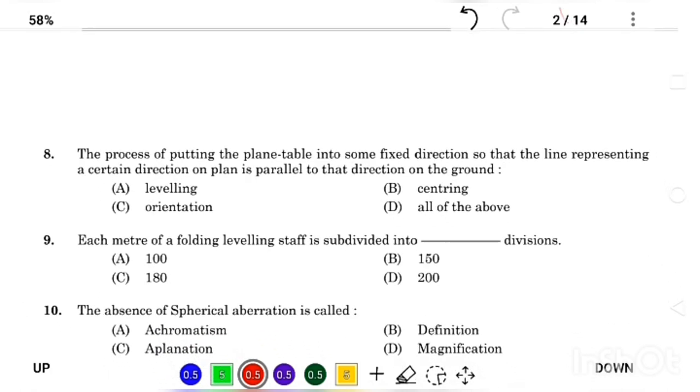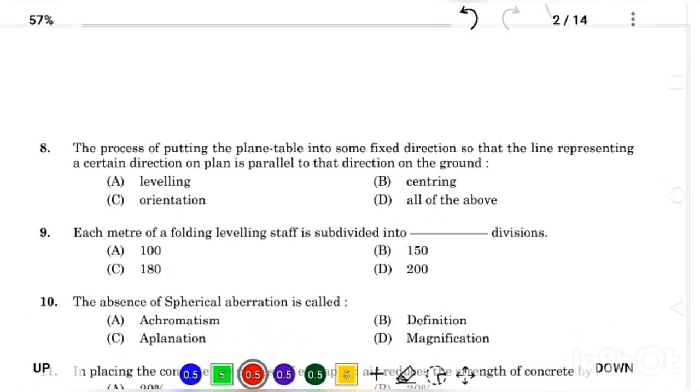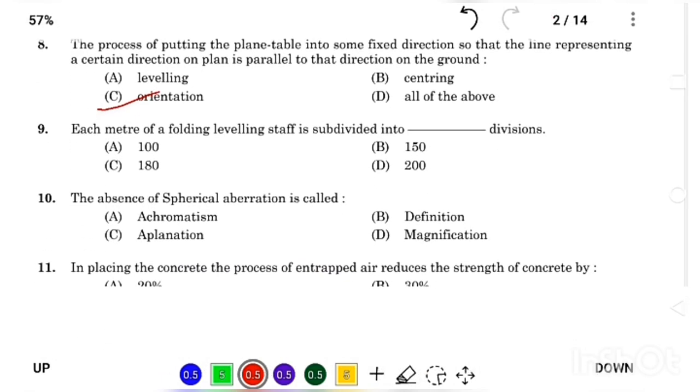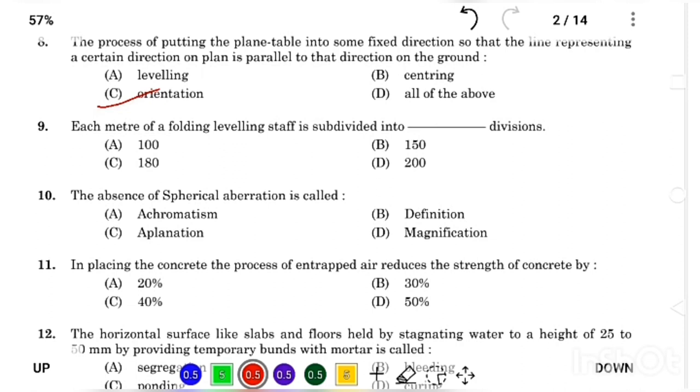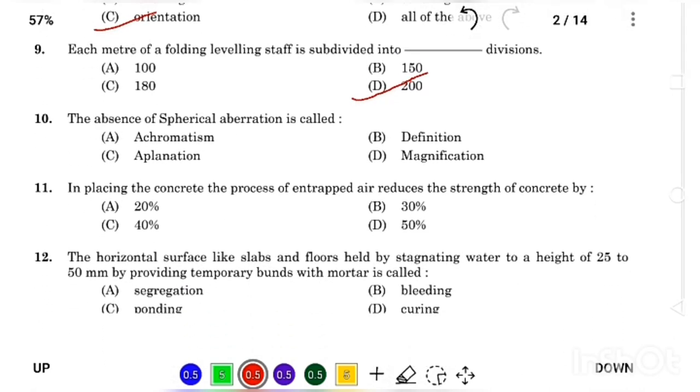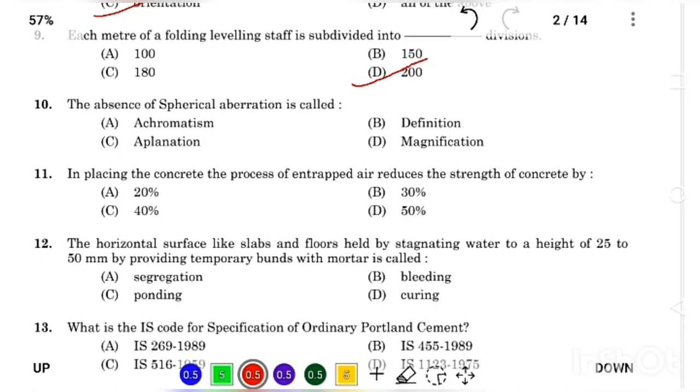The process of putting the plane table into some fixed direction so that the line representing a certain direction on the plane is parallel to that direction on the ground, Answer Option C, orientation. Each meter of a folding leveling staff is subdivided into Answer Option D, 200. The absence of spherical aberration is called Answer Option D, magnification.